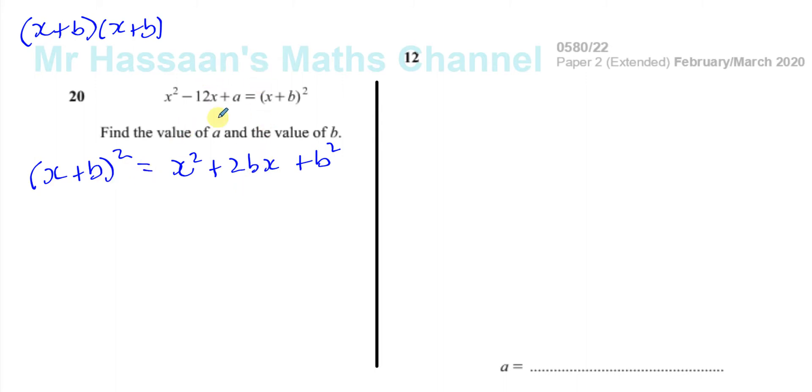Now what we're going to do is they've told us that x squared minus 12x plus a is also equal to x plus b squared. So if we compare the x squared, there's 1x squared, there's 1x squared. There's 2bx's and there's minus 12x's.